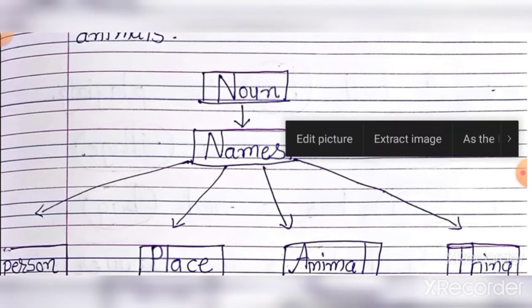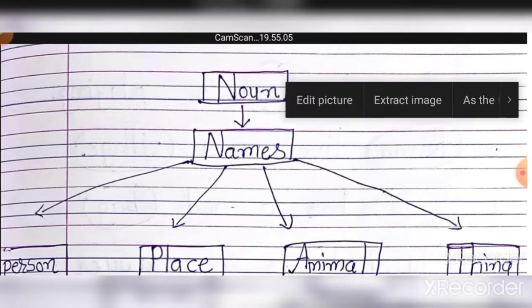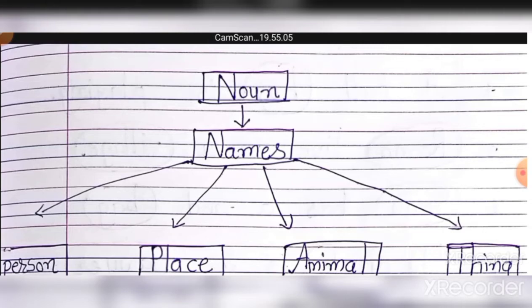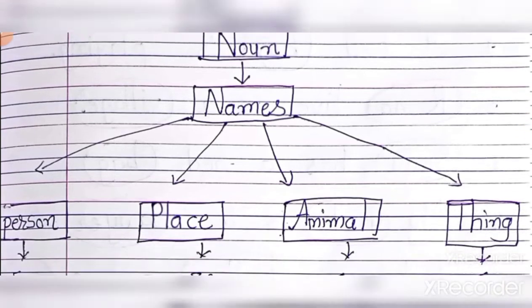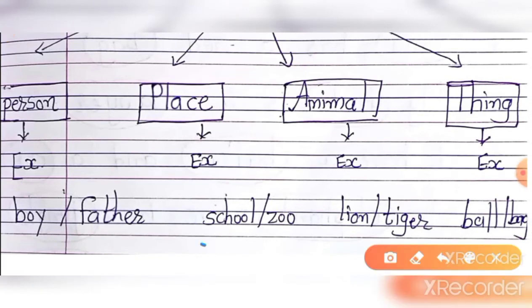So like person — person means a man's name, for example boy, father, grandfather. Right. Place — school, zoo. Zoo means pranisangral, where animals live in a zoo.